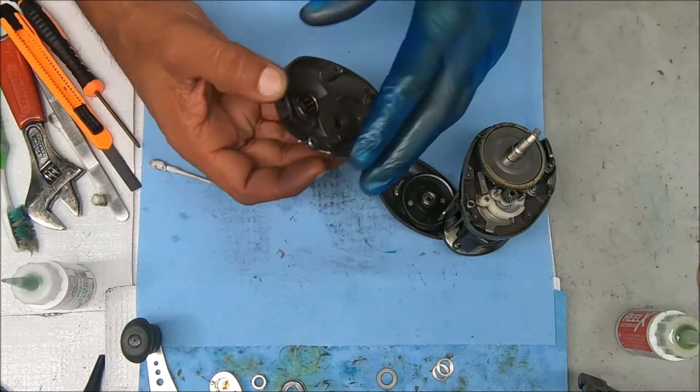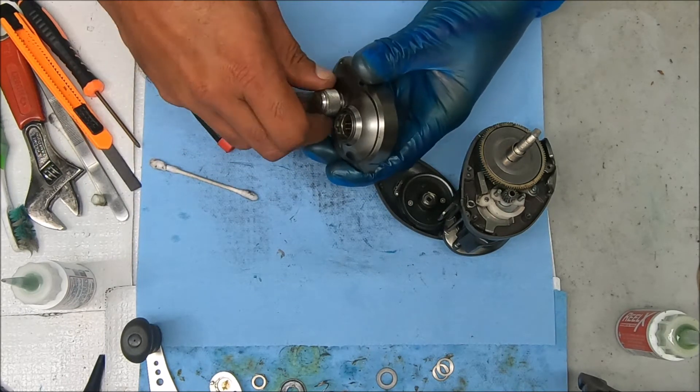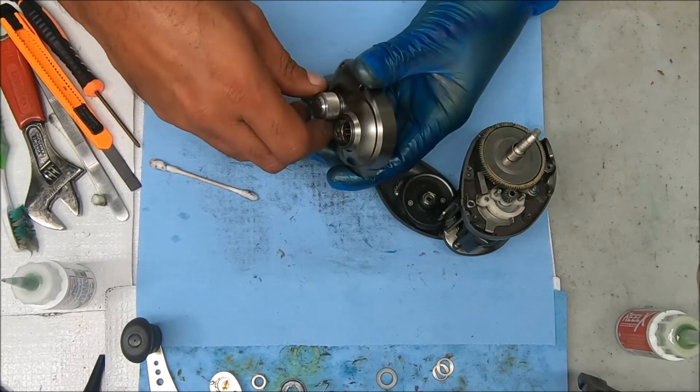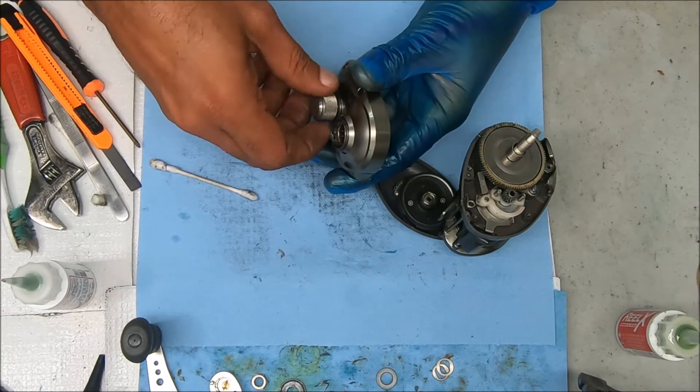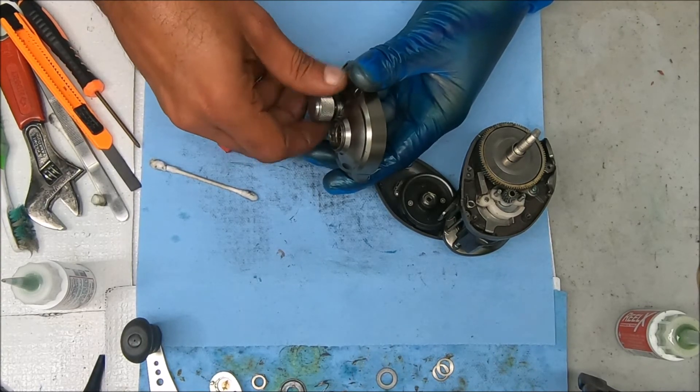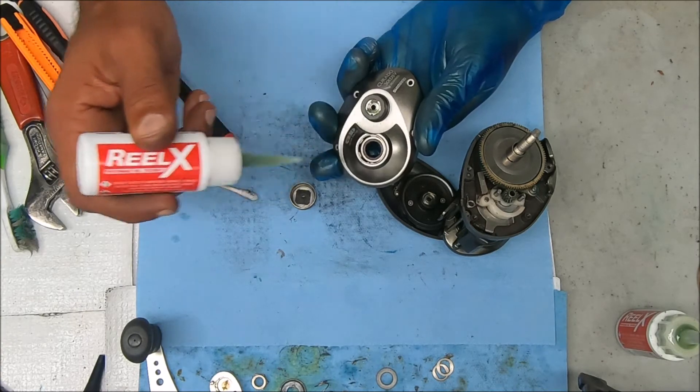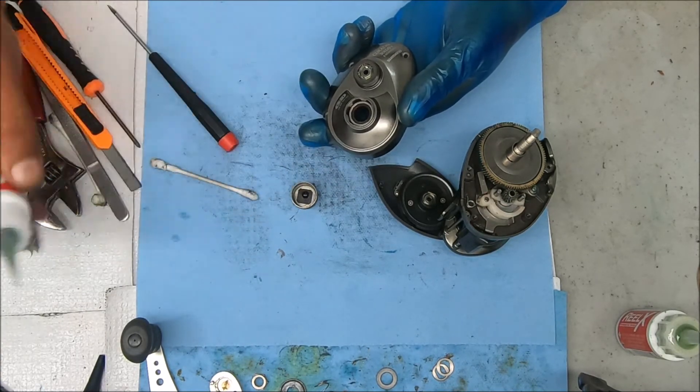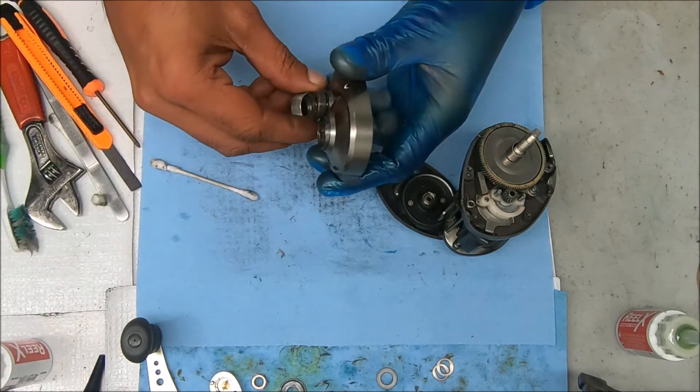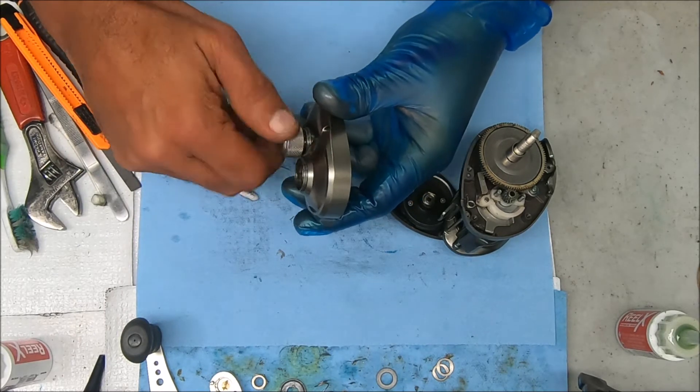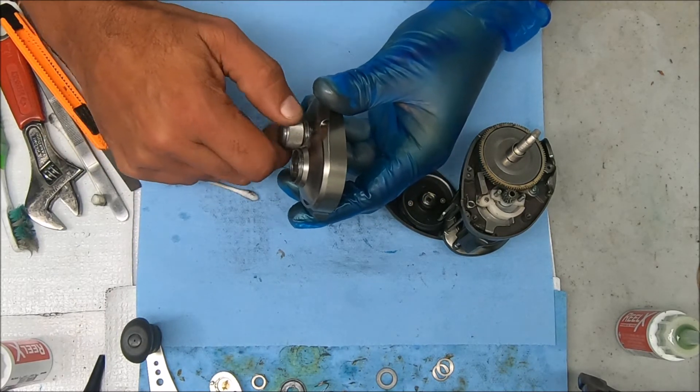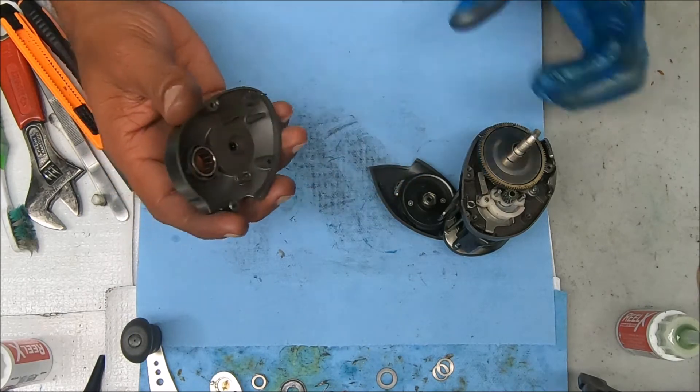Now before I put the cover on, I'm going to open this up and add some oil to the bearing inside here. And a little bit right there. Now when I cover this back up, I'm going to just keep it loose at first. Just give myself some room on it.